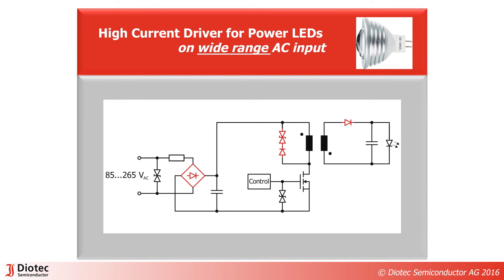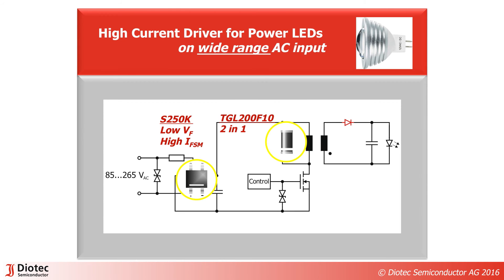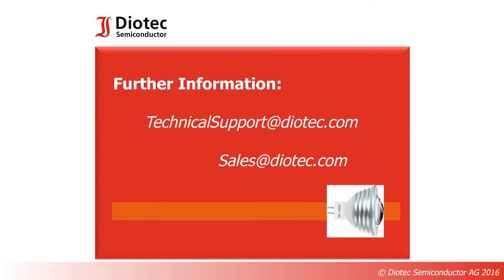For LED lamps to be operated directly on the worldwide AC mains, a much more complex circuit is required. Here are three highlights from DIOTech's product range for these circuits. The S250K, used as input bridge, reduces power losses and allows for high inrush currents. The snubber network TGL200F10 offers a 2-in-1 solution in a single MILF package. The output rectifier PPS560 offers high performance in a small power SMD package.